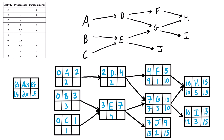For activity D, there are also two successors, so we bring the smaller late start: nine or seven — we bring seven in as the late finish of D, then subtract the duration to get a late start of five. For activity E, it also has two successors, so we grab the smaller of seven or thirteen — we bring seven in, and seven minus four is three. For activity A, it has one successor, so we bring the five straight across and five minus two is three. For B, we bring that three straight in and three minus three is zero. For C, we also bring the three straight in and three minus one is two.